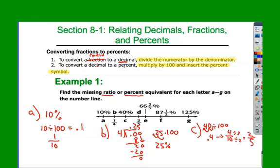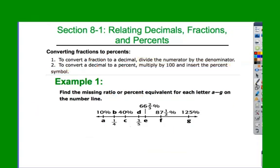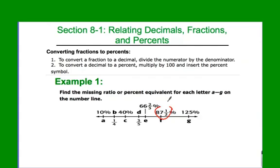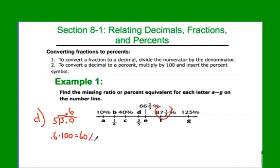I know many of you have memorized a lot of these, especially depending on who your sixth grade teacher was, but you do need to know this process. Problem D: three-fifths. Three divided by five — we have a fraction — change to a decimal. Five doesn't go into three, so we add a decimal point and zero: five goes into 30 six times. So 0.6 times 100 gives me 60 percent. That one's pretty easy.